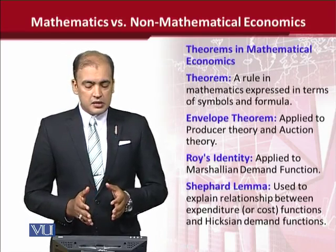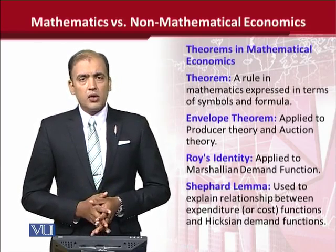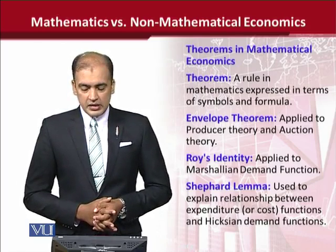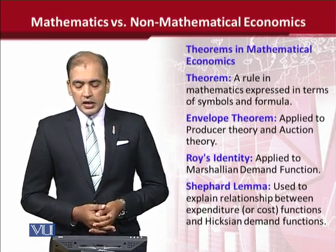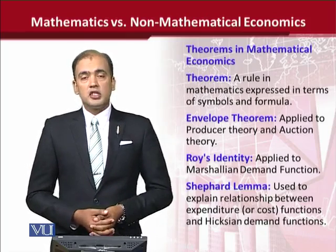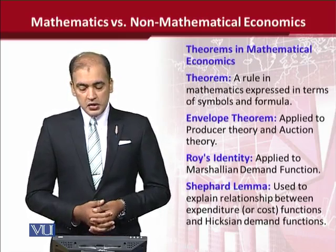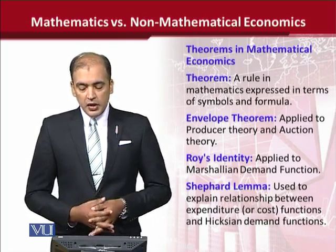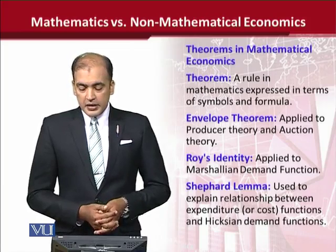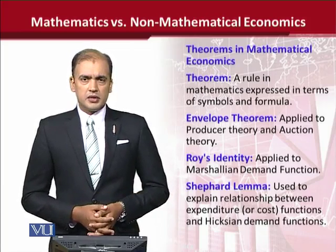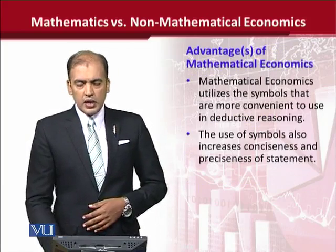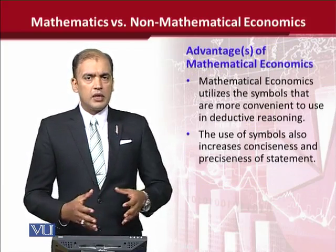The envelope theorem is applied on various theories, for example, producer theory or auction theory. We shall also talk about Roy's identity, which is used to find the Marshallian demand function. We can also use Shephard's lemma, which is used in the relationship between the expenditure function and the Hicksian demand functions. These tools will be dealt with in detail; we don't have to worry right now as we are just having an introduction.